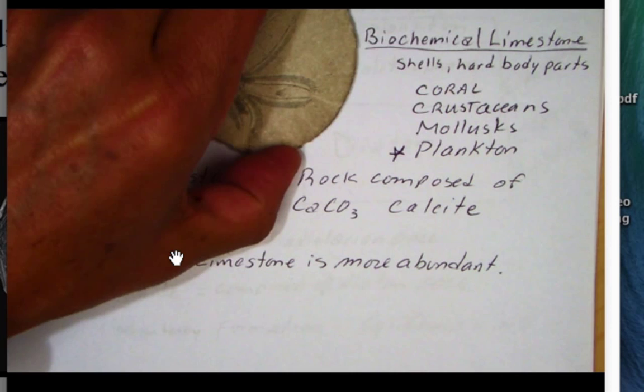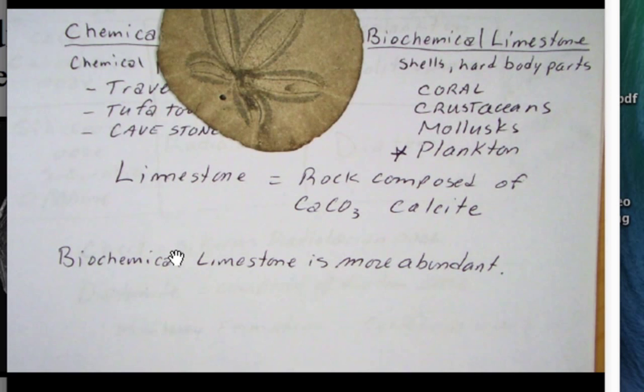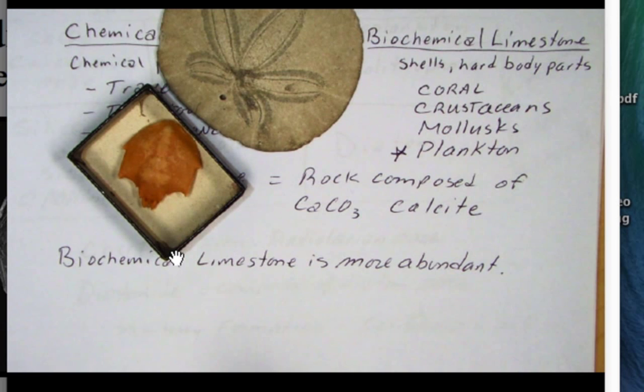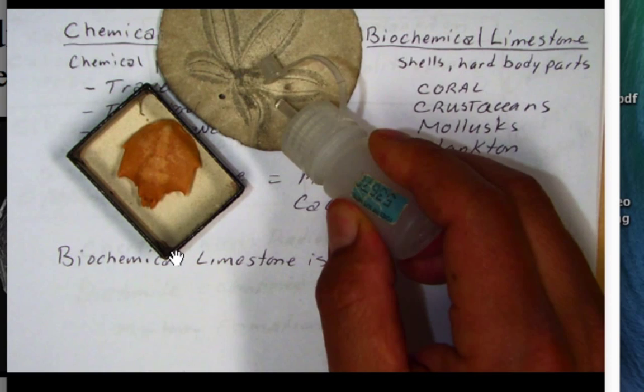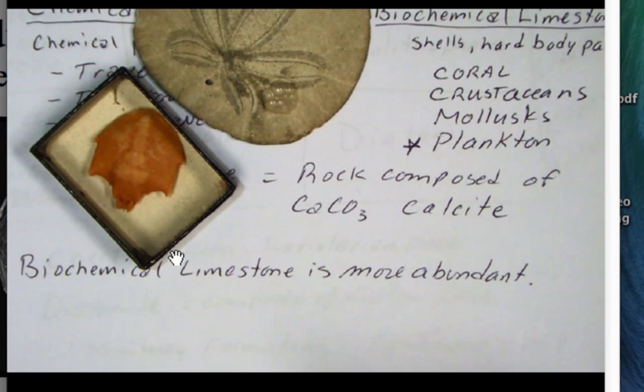Here I have a little carapace of a spider crab, and then I have a test of a sea urchin — a sand dollar. If I put a little bit of acid on it, it should fizz because it's composed of calcium carbonate. And you can see the reaction there, the bubbling. So that's telling us that the sand dollar is making its test, its internal shell, out of calcium carbonate. And the same thing goes for our little spider crab — we'll start seeing the effervescence.